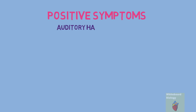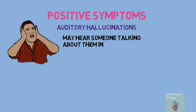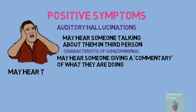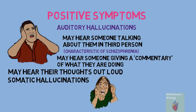Positive symptoms are mainly characterised by auditory hallucinations, which is where the patient hears things that are not there. They may also hear someone talking about them in third person — this is characteristic of schizophrenia. They may hear someone giving a commentary of what they are doing, and they may hear their thoughts out loud. It can also involve somatic hallucinations, such as feeling insects crawling up their skin.